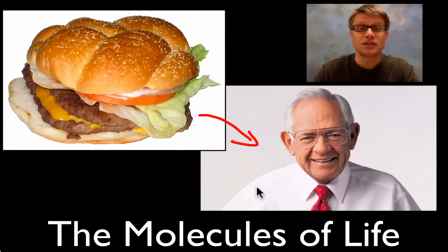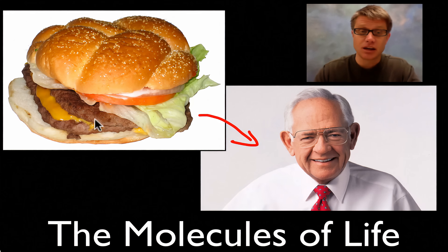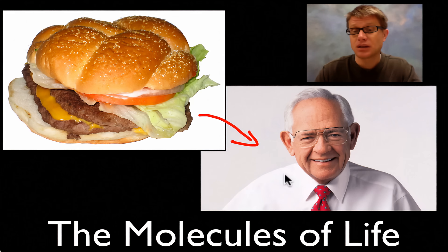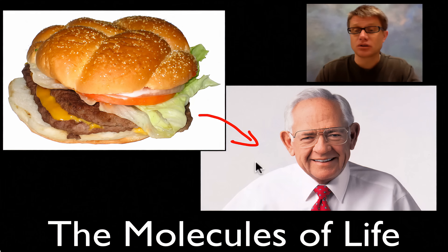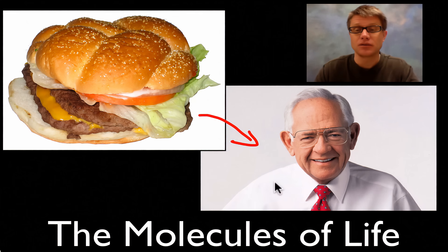This right here is called a Dave Thomas. Dave Thomas is the founder of Wendy's. But Dave Thomas and his body was made up of building blocks that came from the food that he created. In other words the proteins in the burger are broken down into amino acids and those make the proteins in him. Or the sugars in the carbohydrates of the bun are broken down to make sugars used in cellular respiration to make ATP. Or the fat inside the burger is used to make the lipids inside the cell membranes of Dave Thomas.